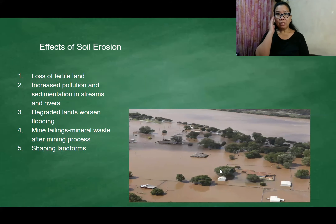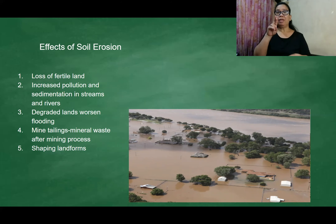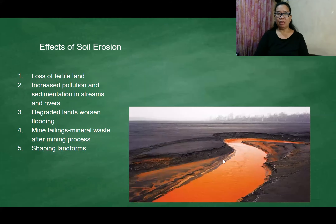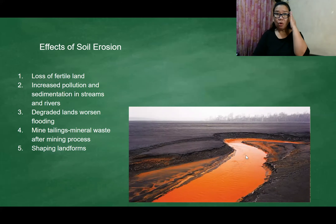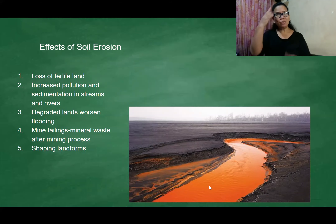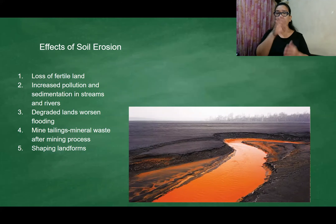Another big effect of erosion is seen with slugs — look at the image here. And do you know about mine tailings? The color of the river became like this because of mine tailings — all the mineral waste left after mining results in this kind of pollution.